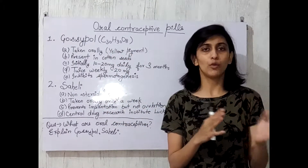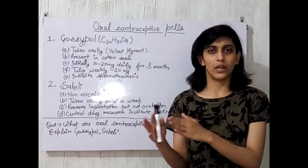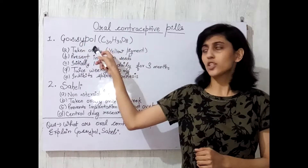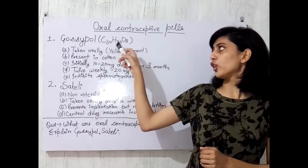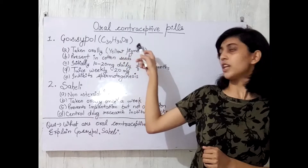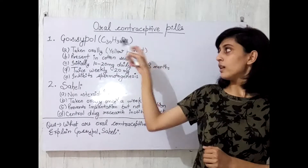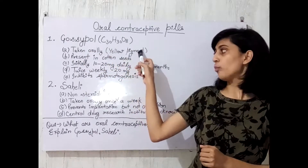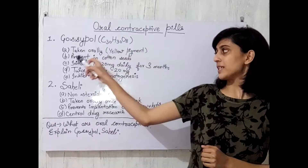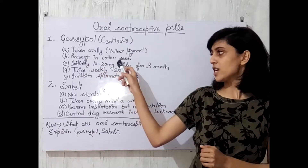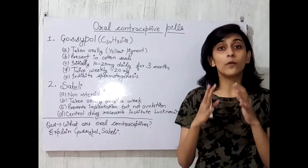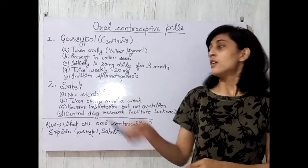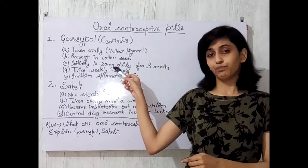Let's discuss gossypol first. It has the molecular formula C30H30O8 and is taken orally. It is a yellow pigment present in cotton seeds. Initially, when we start taking those pills,